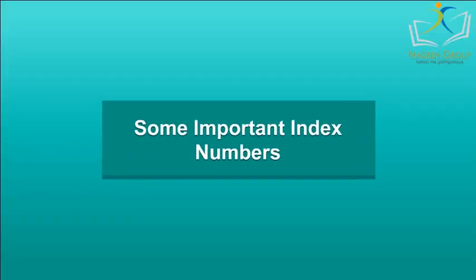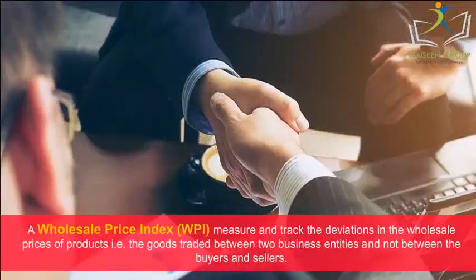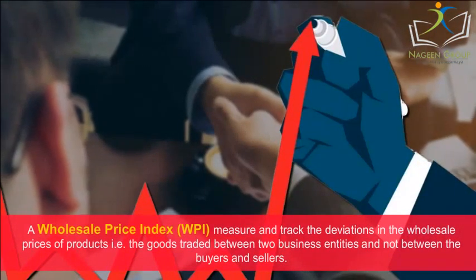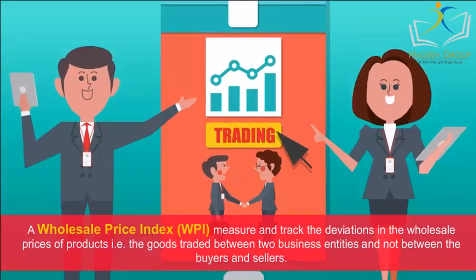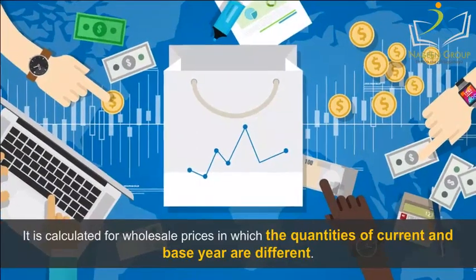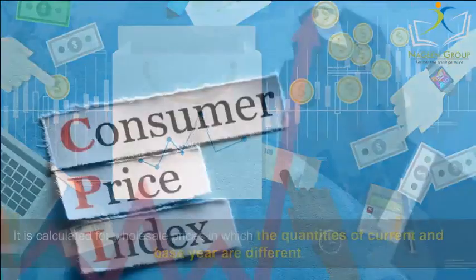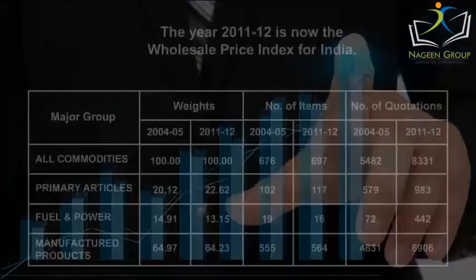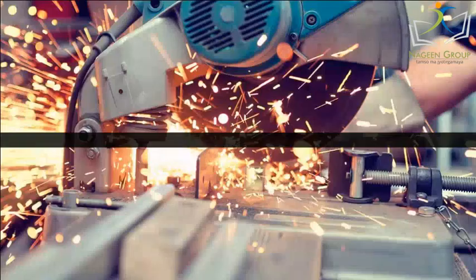Wholesale Price Index (WPI): A Wholesale Price Index measures and tracks the deviations in the wholesale prices of products — that is, goods traded between two business entities and not between buyers and sellers. It is calculated for wholesale prices in which the quantities of the current and base year are different. Unlike the CPI, it does not have any reference consumer category. The year 2011–12 is now used as the base year for the wholesale price index for India.